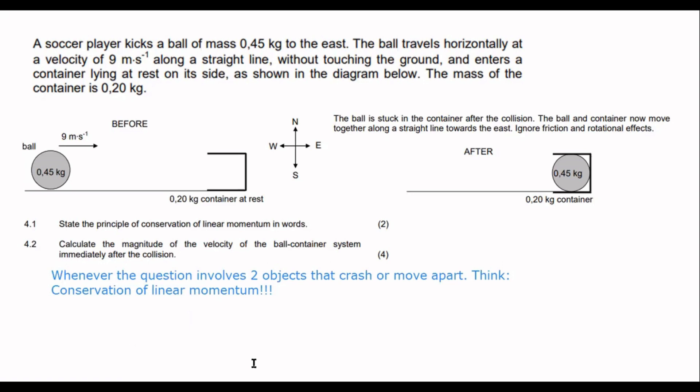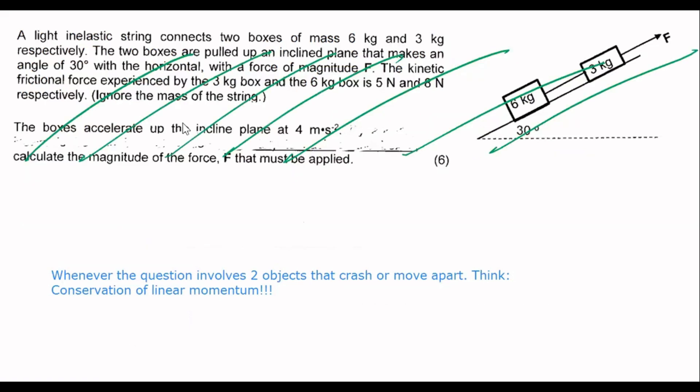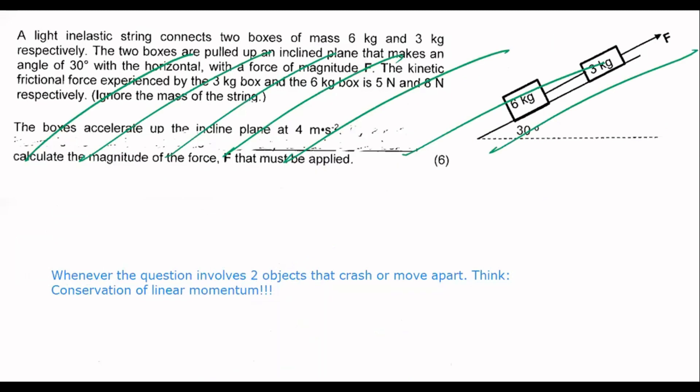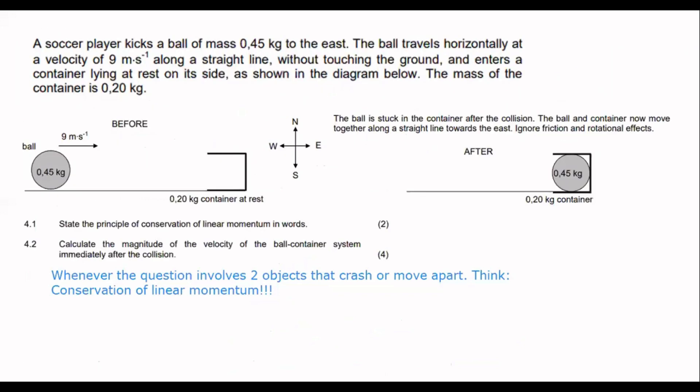But Kevin, didn't we have two objects in the previous question? Some of you might be saying. Yep, I agree, we did. But in this question, the objects are not crashing into each other, and they're not moving away from each other. They're just moving together. But in this question, we actually have a physical collision that is going to take place between the ball and the container. There is a collision happening. And so, we're going to use conservation of momentum.